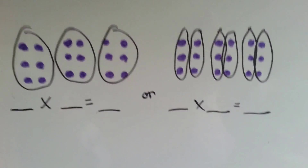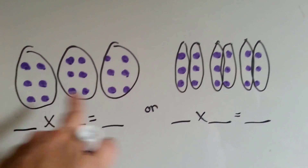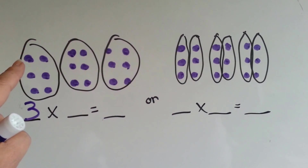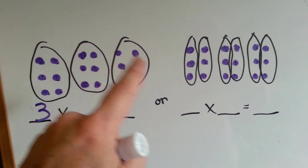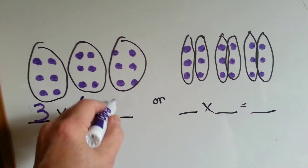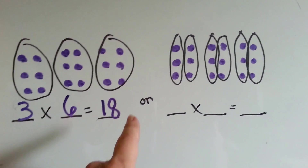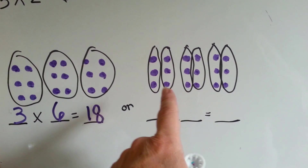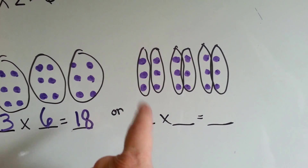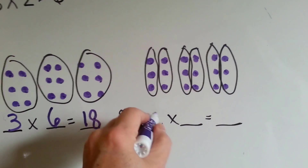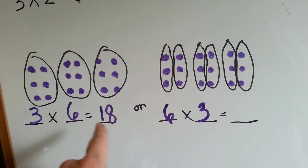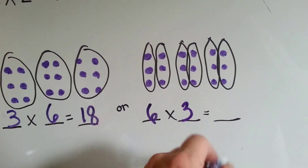Let's try another one. How many black circles are here? Three. How many purple dots are in each circle? Six. Each of these has six dots. Three times six is eighteen. Now I've still got eighteen dots, but I've circled them differently. Instead of six dots in one circle, there's only three. How many black circles are there? Six. How many purple dots are in each one? Three. Three times six equals eighteen, or six times three equals eighteen.